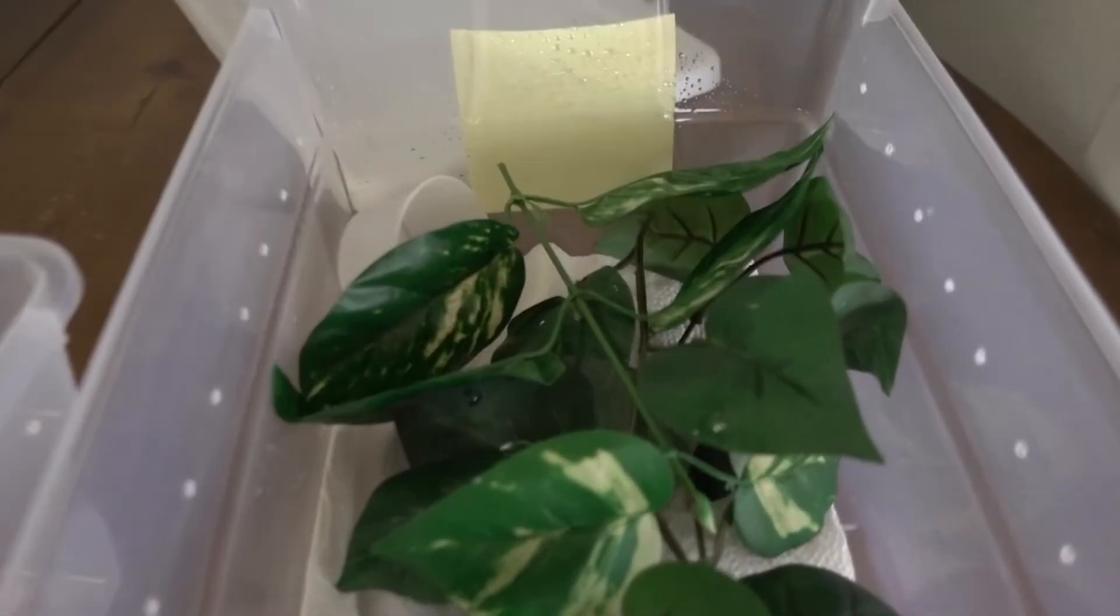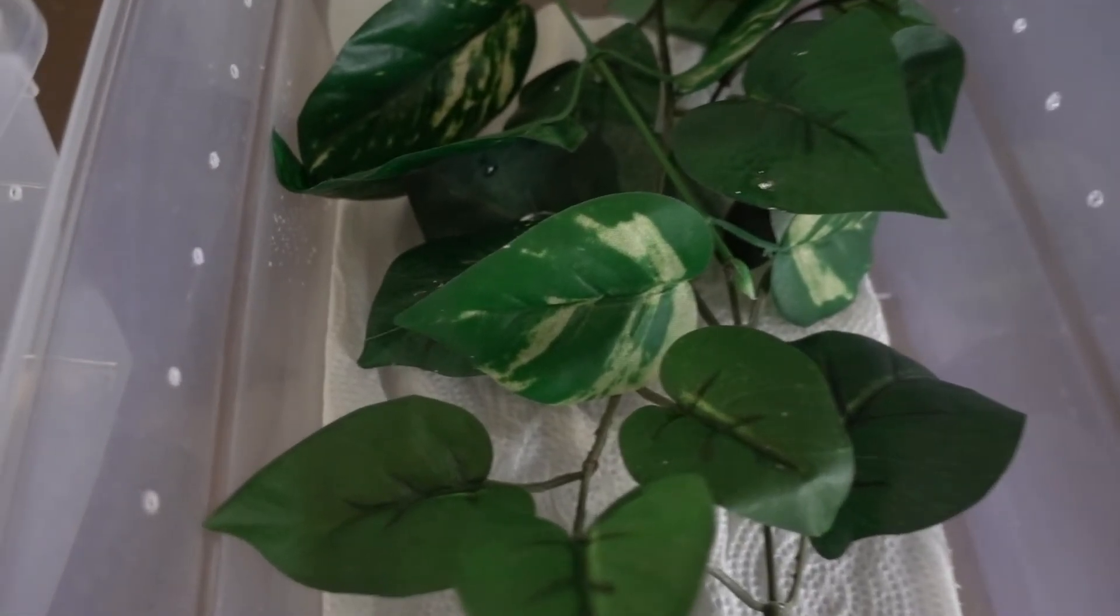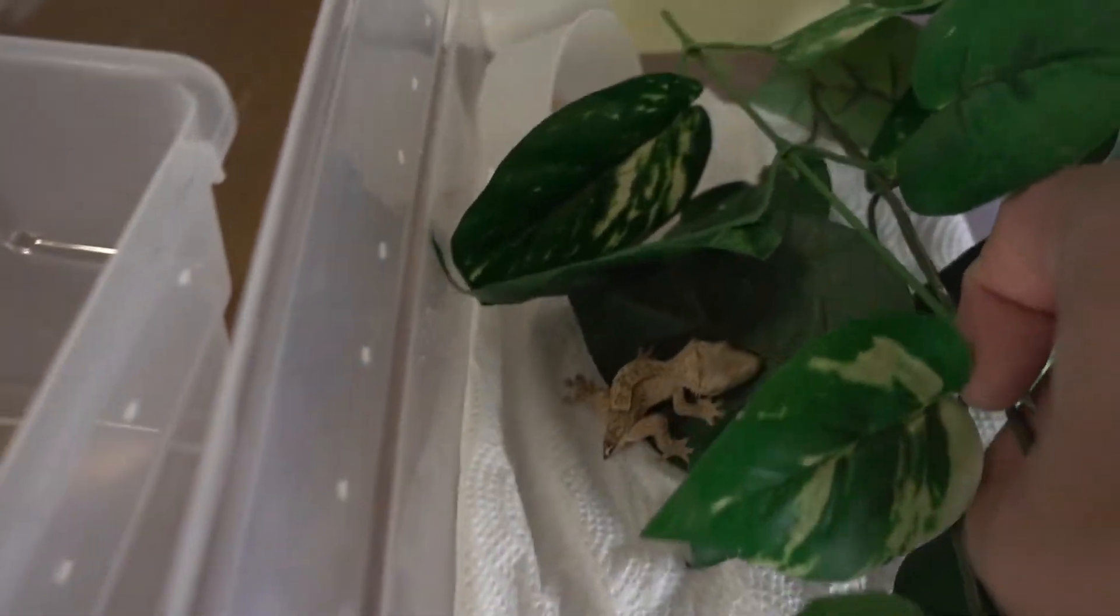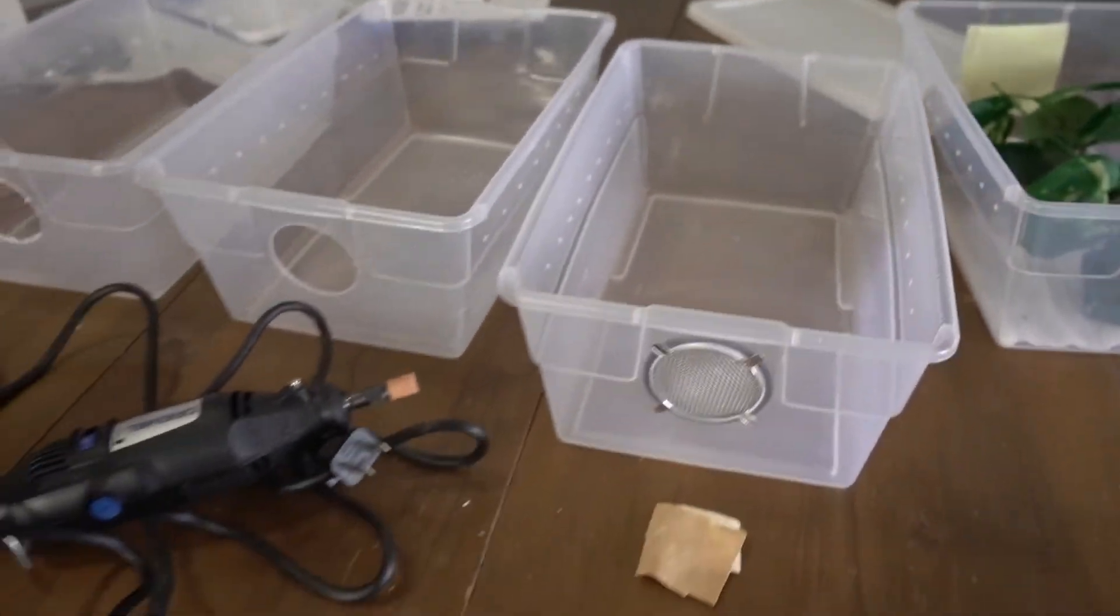And I misted this last night and there's still some water on the tub but the rest of the tub's drying out. So by tonight this tub is mostly going to be dry which is good so it gives them a dry cycle and a humid cycle to where they can get water from the leaves in the tub. So thank you guys for watching and stay tuned for my next video.